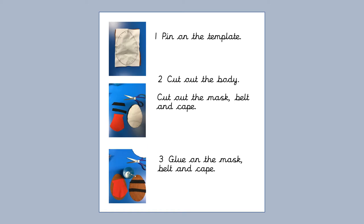I think that some of these I could just leave as they are. 'Glue on the mask, belt and cape' - I could just leave that as it is; I think that could be enough information with the photograph. But I'm going to show you how I could add more information to each sentence so you've got an idea of what to do. For step number one, so far I've just put 'pin on the template.' I remembered that pins are quite sharp, and if you've never used pins before somebody might need to know that. So I decided to keep 'pin on the template' and add 'remember pins are sharp, so be careful' - using a conjunction there - just a little reminder so that people know pins are sharp.